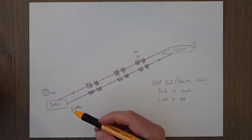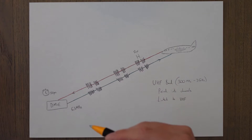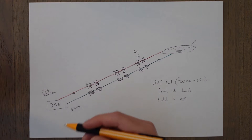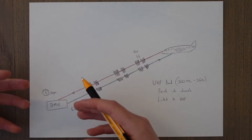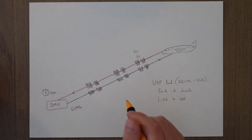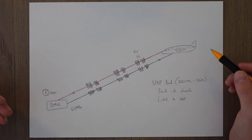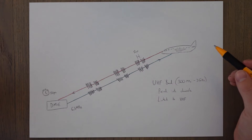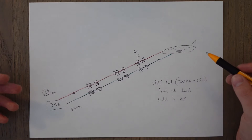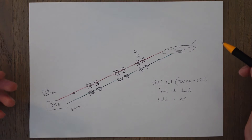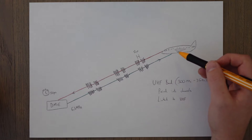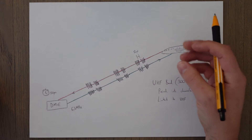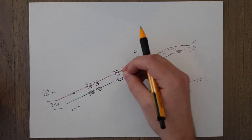The ground station is typically co-located with a navigational aid like a VOR, NDB, or an instrument landing system (ILS), which we'll look at in the next class. And in the aircraft there's a DME interrogator that transmits and also receives radio signals.